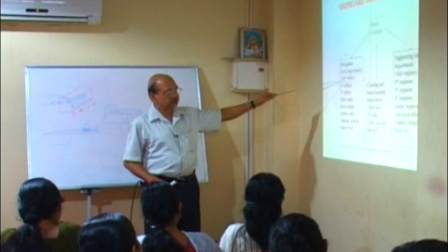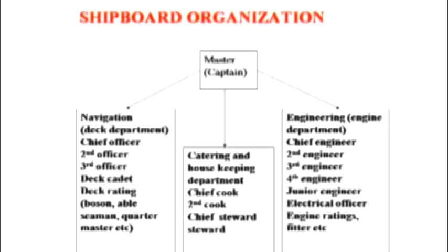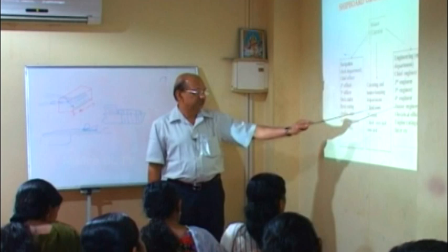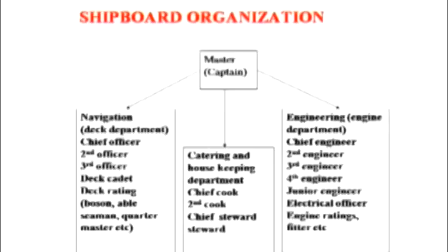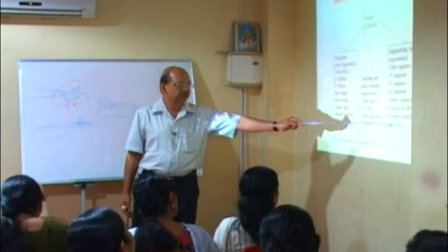In the engineering department, also called the engine department, the chief engineer is the senior most person. Under him you have the second engineer, third engineer, fourth engineer, junior engineer, electrical officer, and engine ratings. Assistants in the engine room are called ratings — engine ratings. You also have fitters and junior fitters depending on the category of the ship.